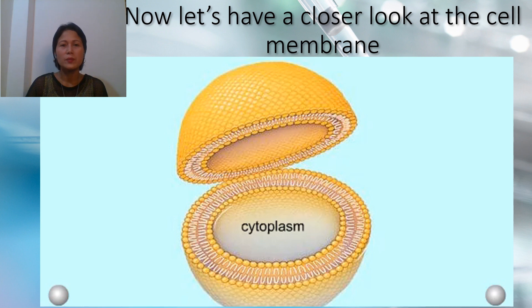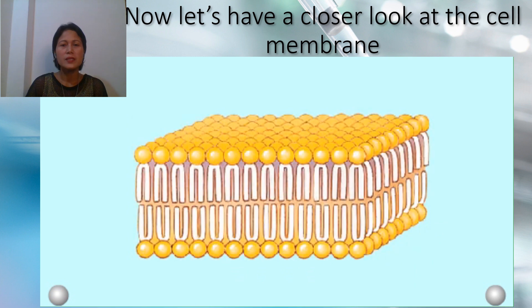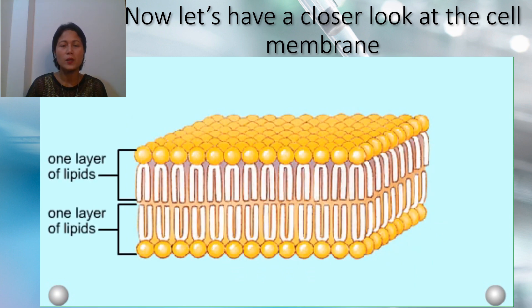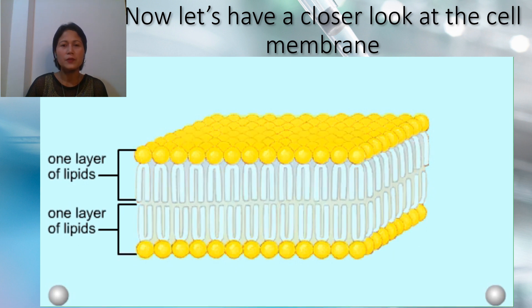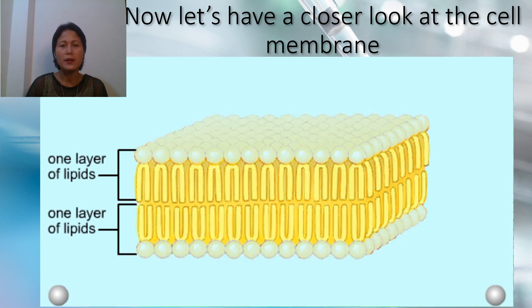Now let's take a closer look at the cell membrane. All cell membranes have the same lipid bilayer structure. The bilayer consists of two sheets of phospholipid molecules oriented in opposite directions. The heads of the phospholipids are facing outward — they are attracted to the water environments inside and outside of the cell. The hydrophobic phospholipid tails are sandwiched between the heads, which minimizes their interaction with water.